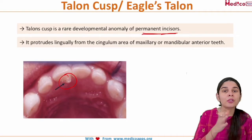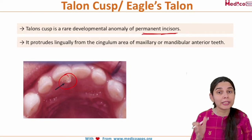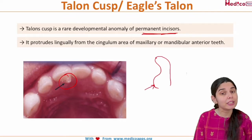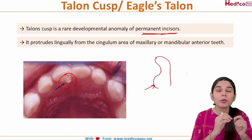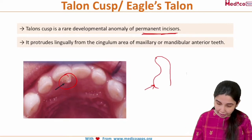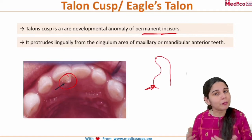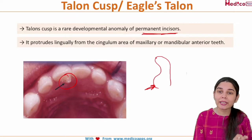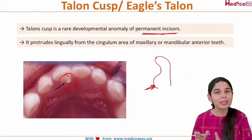What is the cingulum area? This anomaly is seen on the permanent incisors. Looking at the structure of the permanent incisor, the bulging portion is the cingulum. This cusp, which is a rare developmental anomaly, protrudes lingually from the cingulum area of the maxillary and mandibular anterior teeth. Please remember, cingulum is present in the anterior teeth.